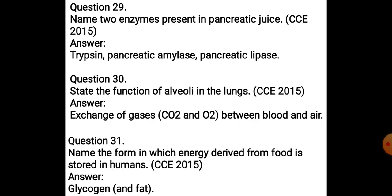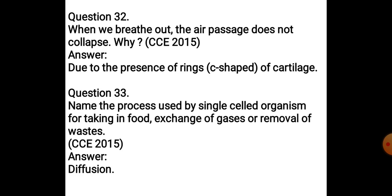Name the forms in which energy derived from food is stored in humans. That is in the form of glycogen and fat. Next: When we breathe out, the air passage does not collapse — why? Because in the trachea, C-shaped rings of cartilage are present. The trachea runs parallel to the esophagus, and these cartilage rings help the trachea stand firmly and not collapse in the absence of air.